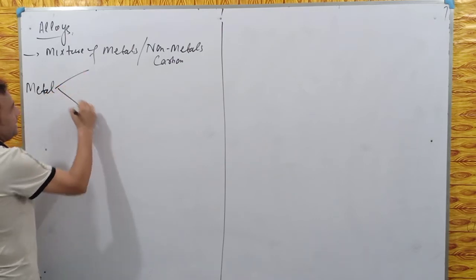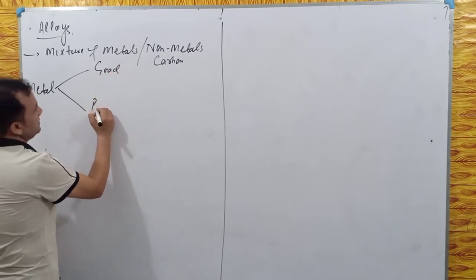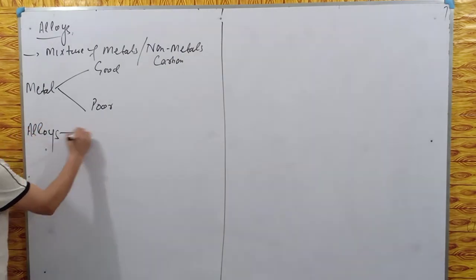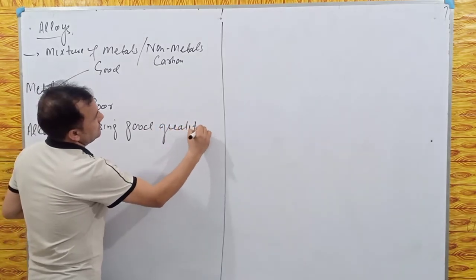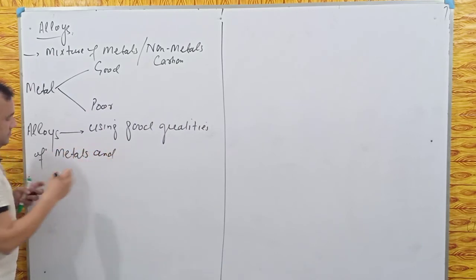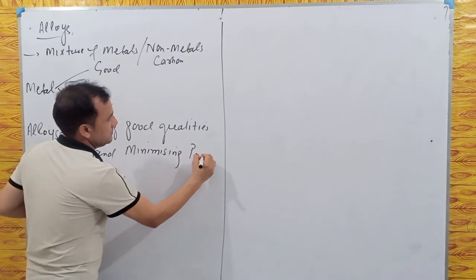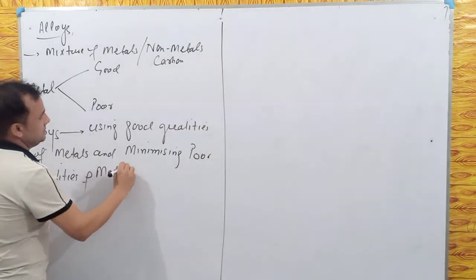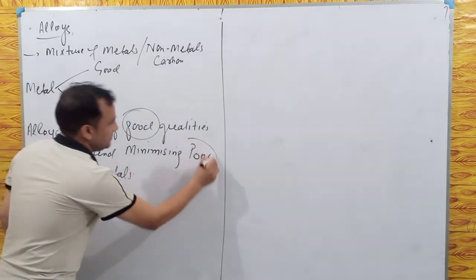Why are alloys formed? Each metal has some good qualities and some poor qualities. Alloys are made by using the good qualities of metals and minimizing their poor qualities. This is the main principle of making alloys: using good qualities and minimizing poor qualities.